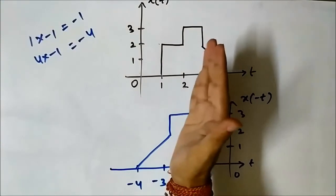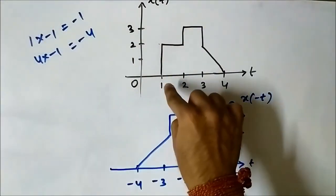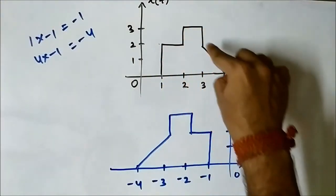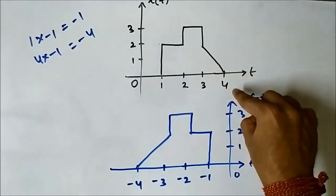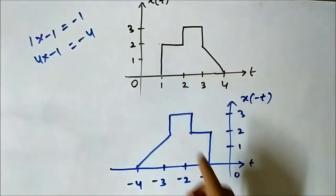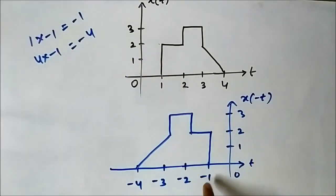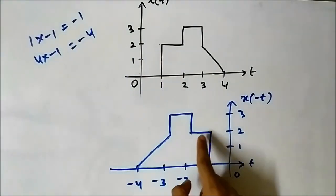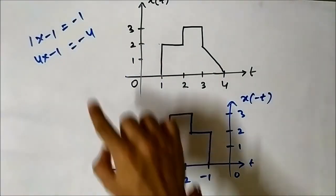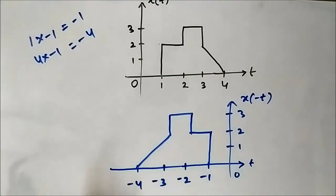The reversed signal takes place in the same way but in the opposite order. Here it started from 1, followed a particular pattern and shape, and ended at 4. In the time-reversed version it will start at minus 1, follow the same shape and amplitude, and end at minus 4. This is the time reversal operation performed on these signals.